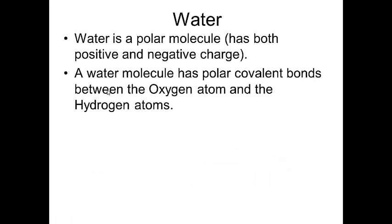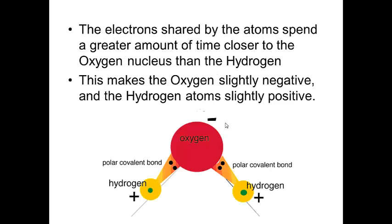What happens here is water ends up being something called a polar molecule. It's slightly positive on one side and slightly negative on the other. So the polar bonds that happen between the oxygen and hydrogen atoms actually make the oxygen side slightly negative and the hydrogen sides slightly positive.